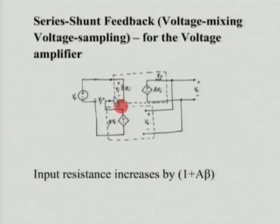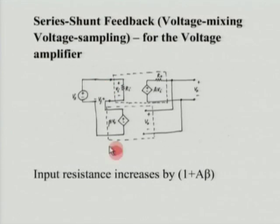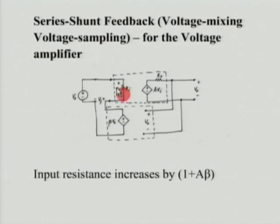How is it done? We will not derive it — time doesn't permit — but intuitively: since the input voltage is getting reduced by the fed-back signal, effectively the current flowing in gets reduced. That is equivalent to the input resistance increasing. So by applying feedback, I have essentially reduced the current flowing by reducing V_i, which effectively increases the input resistance. If your input resistance without feedback was R_i, after applying negative feedback it becomes R_i times (1 + Aβ).